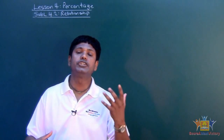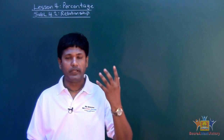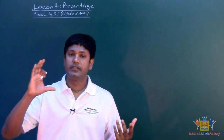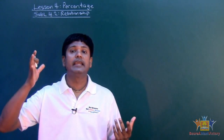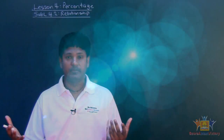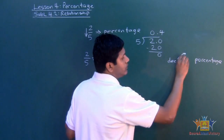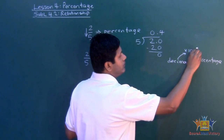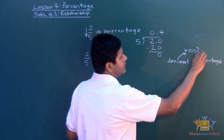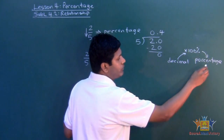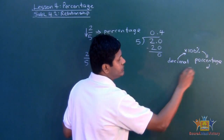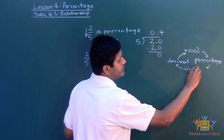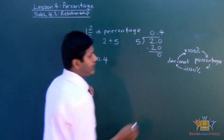The relationship between percentage, fraction, and decimal: when you go from decimal to percentage, you multiply by 100%. When you go from percentage to decimal, you divide by 100%.